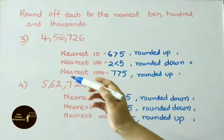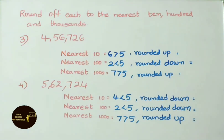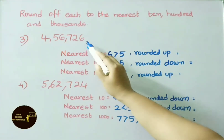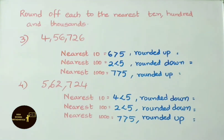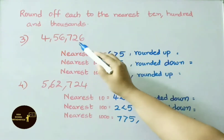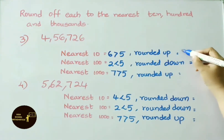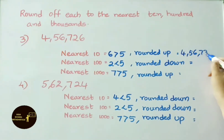Third number: 4,56,726. Nearest 10: the digit to the right of the 10s place is 6. Since 6 is greater than 5, we round up — make 6 into 0, and 2 becomes the next 10, that is 30. So the answer is 4,56,730.